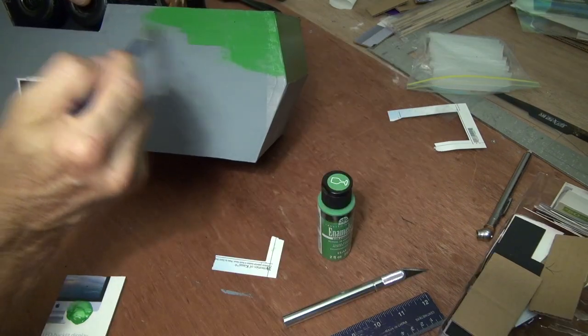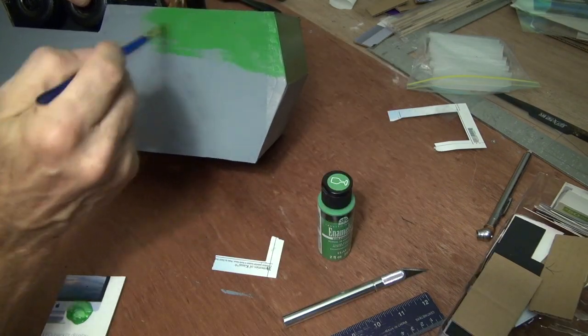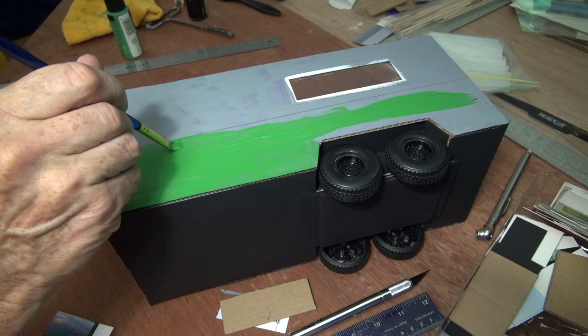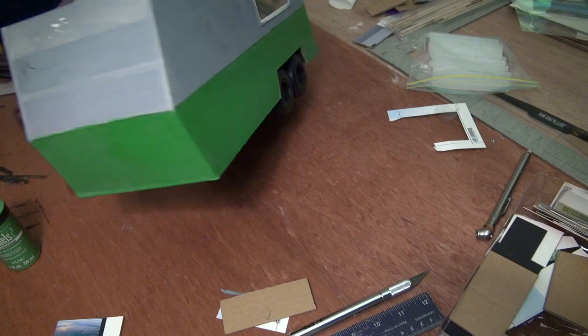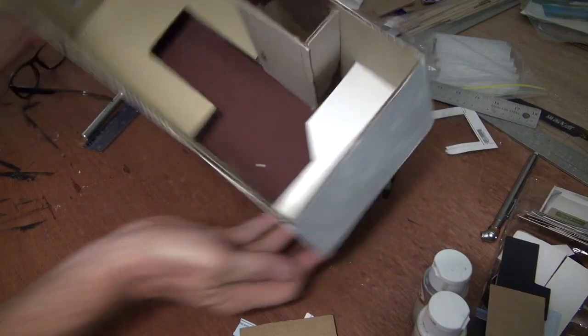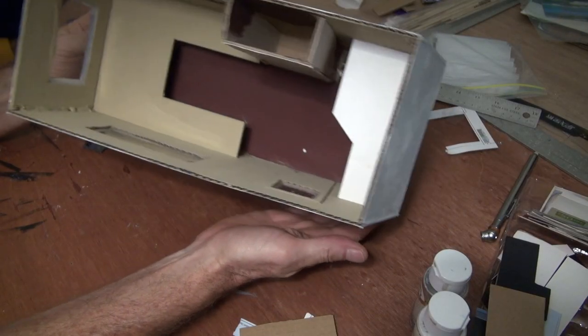Here I'm painting an enamel paint over the gray paint. Later I'm going to change my mind and change the color. But you can see the interior coming together there.